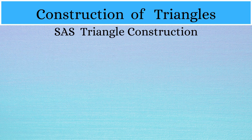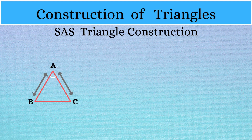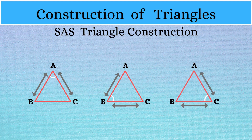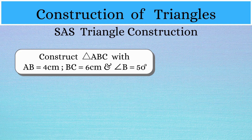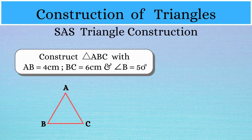Now we move on to SAS triangle construction. In order to construct a triangle using the SAS condition, we need to have the lengths of two sides of the triangle and the included angle. Let's see how we do it using our example. Construct a triangle ABC with AB equal to 4 cm, BC equal to 6 cm and angle B equal to 50 degrees. As a first step, let us roughly sketch triangle ABC, marking the measurements of the two sides and the included angle.